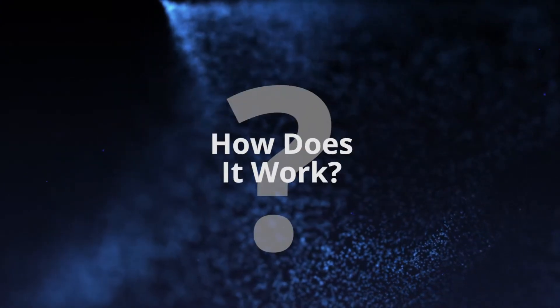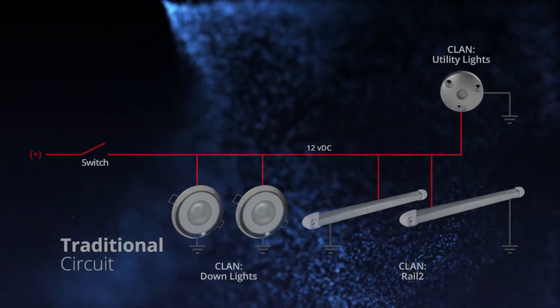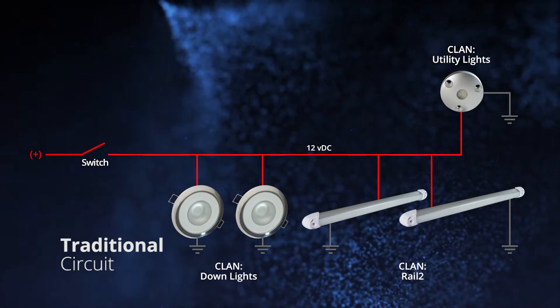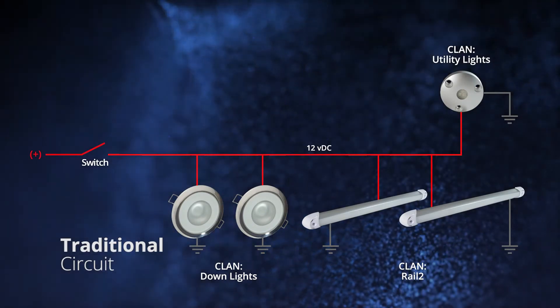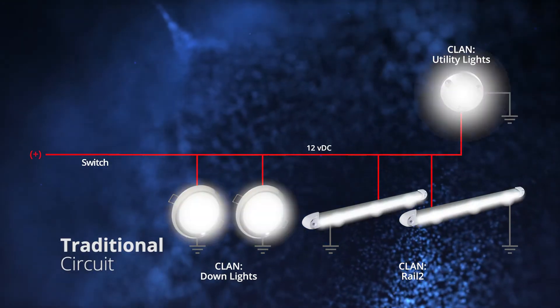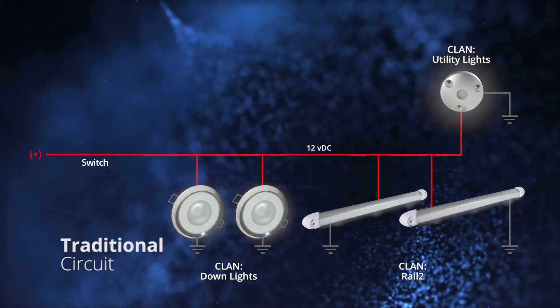What does that mean? Well, on a traditional hard circuit, all lights behave the same when the power is turned on — on, off, dimming, etc.